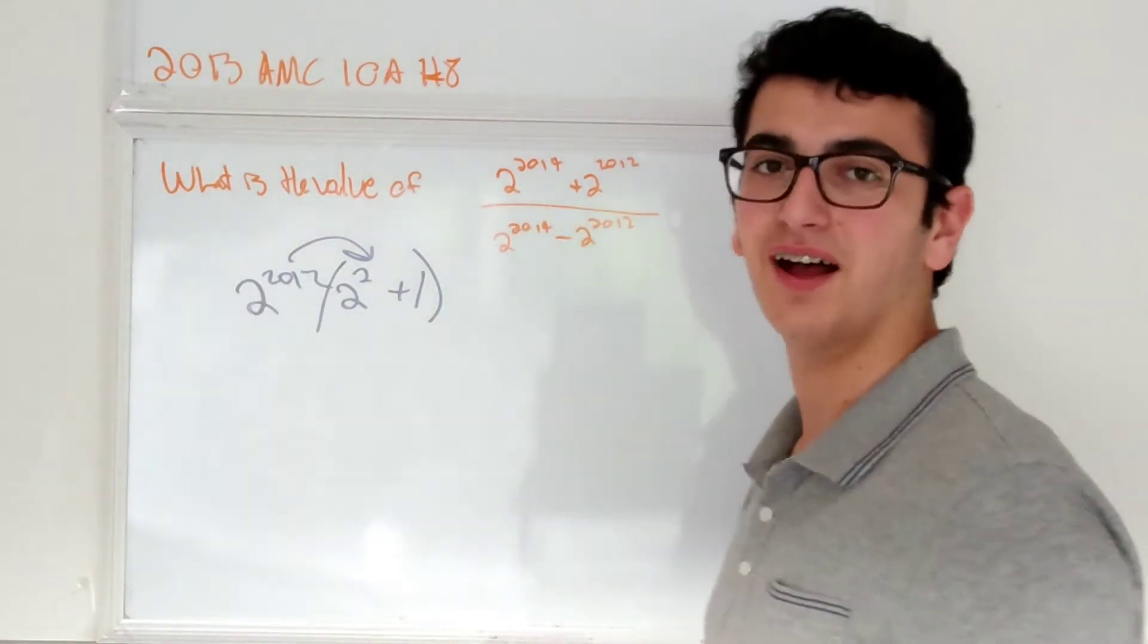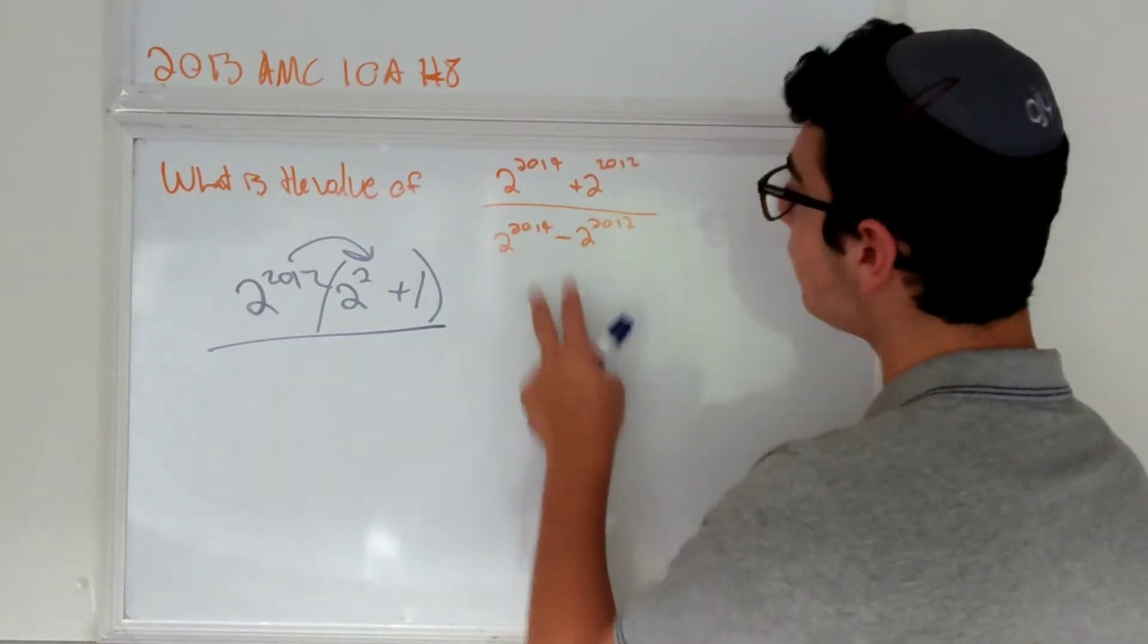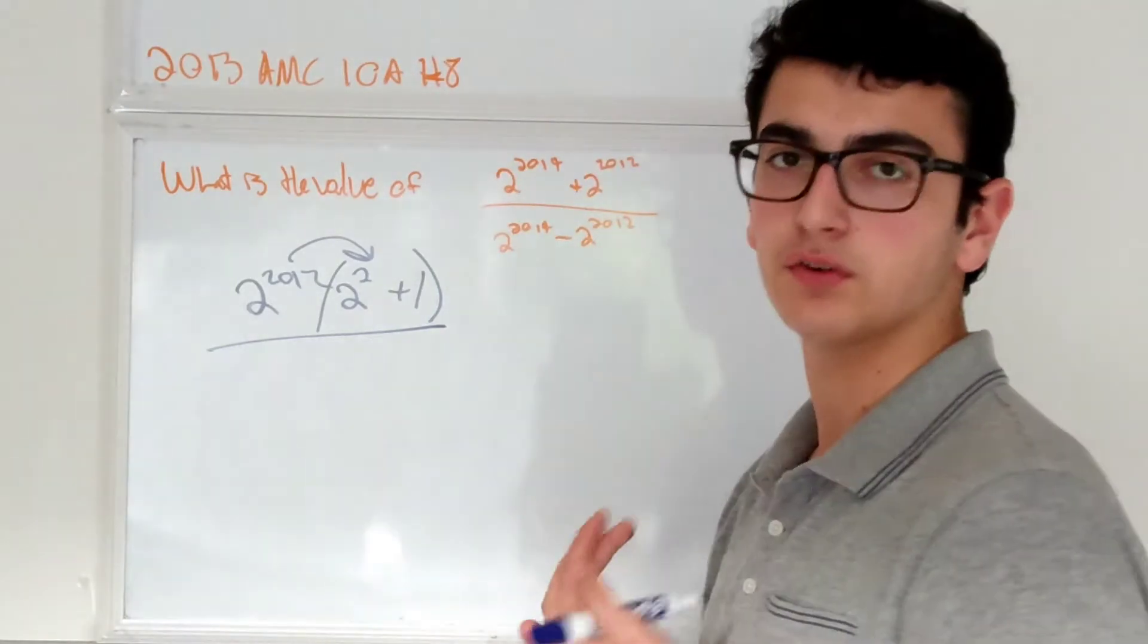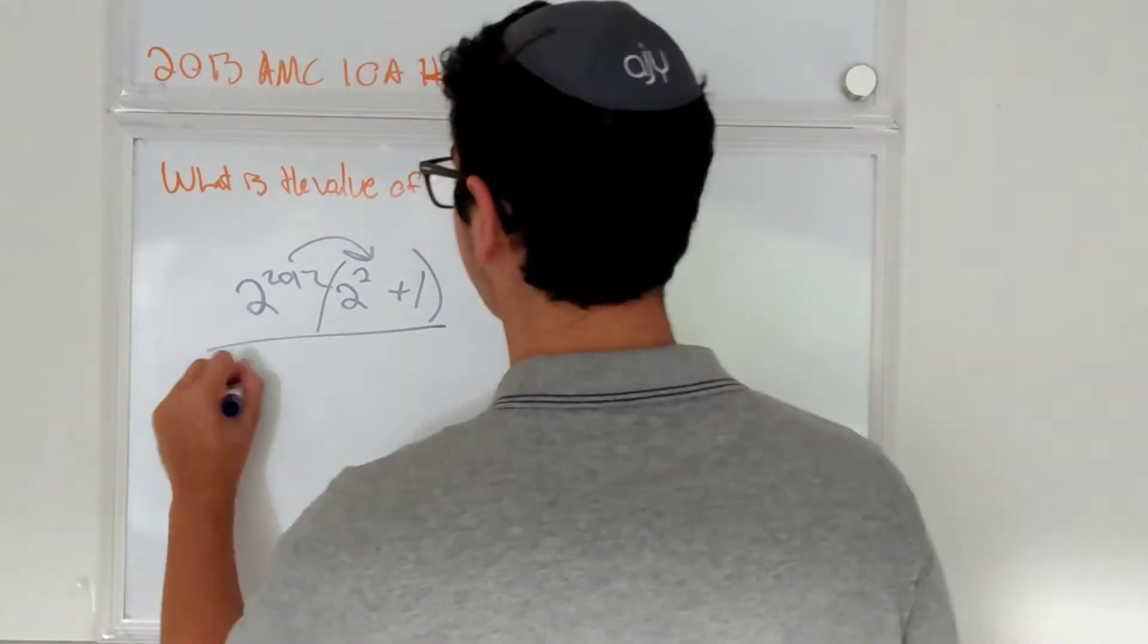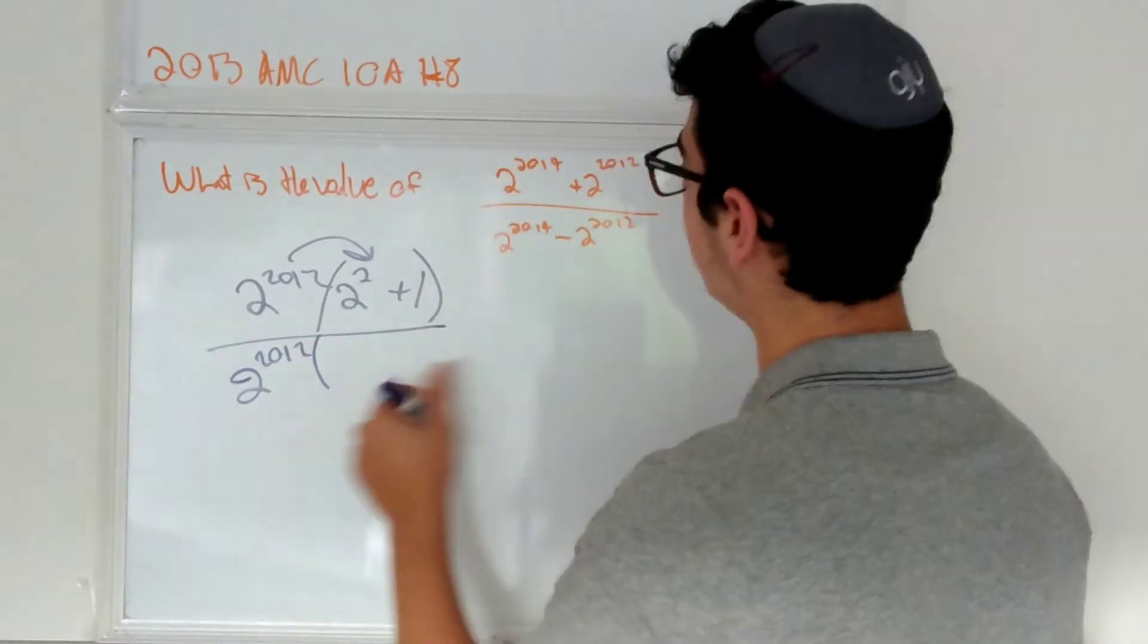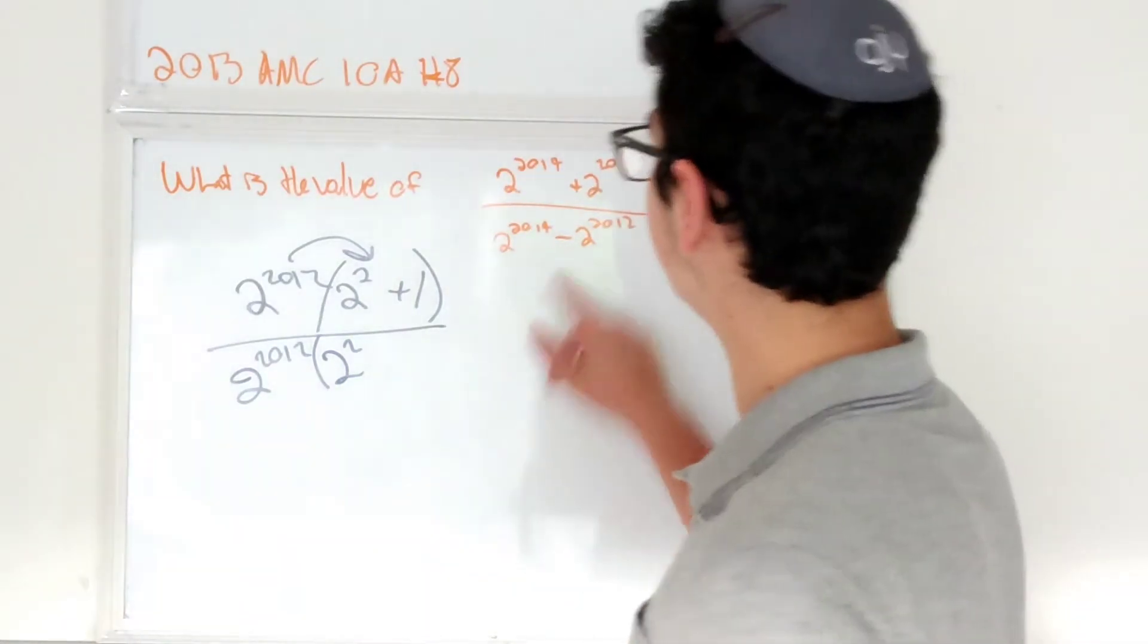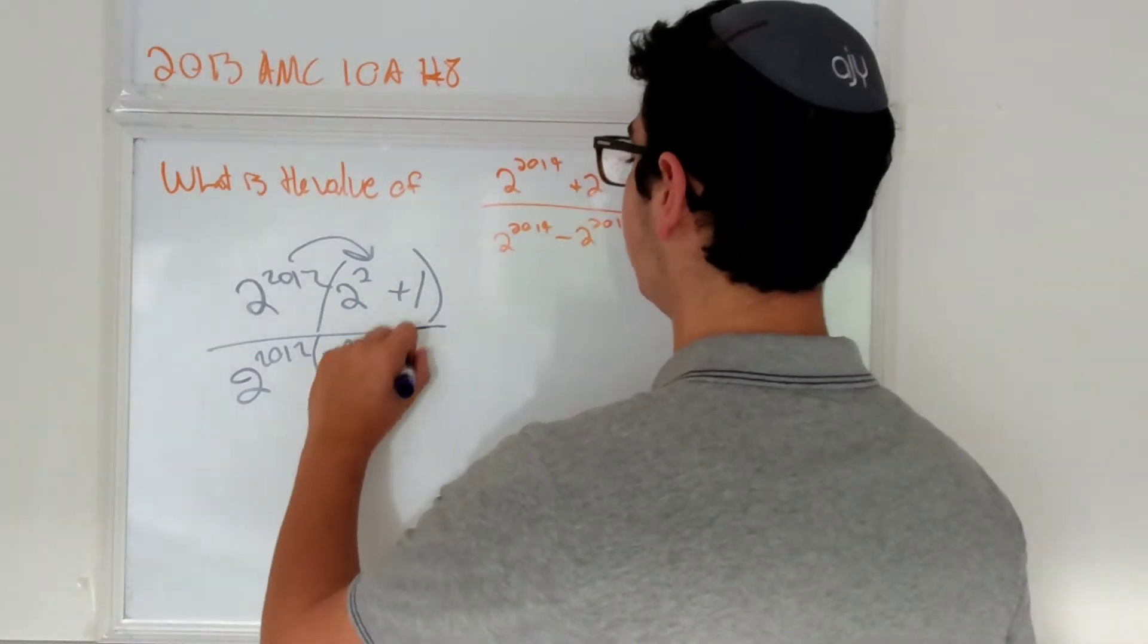And now on the denominator side, well, you'll notice they both also have 2 to the 2012th in common. So it's going to be 2 to the 2012th times 2 squared, this time it's going to be minus, because there's a negative over here, minus 1.